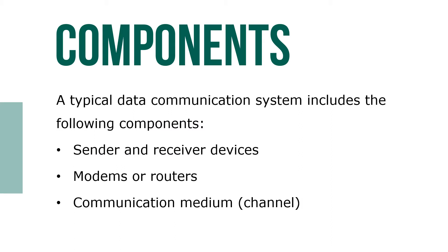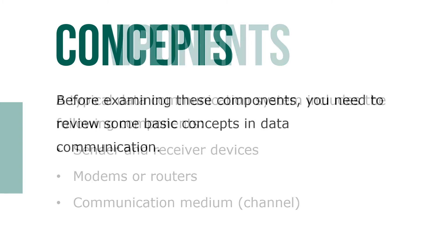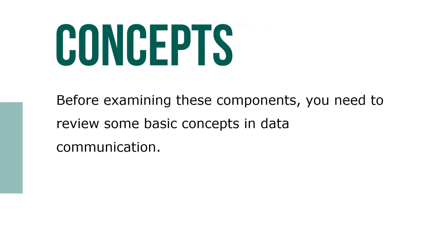A typical data communication system includes the following components: sender and receiver devices, modems or routers, and a communication medium like a channel. Before examining these components, you need to review some basic concepts in data communication.